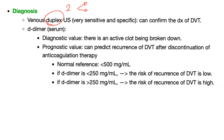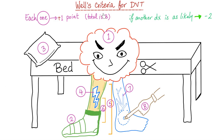Keep in mind that DVT is a common, preventable cause of death in the hospital, so we as doctors need to be vigilant. Other tips and tricks to help diagnose DVT are a group of criteria known as Wells criteria. If you look at the diagram here, you'll discover all of the Wells criteria — but if you don't understand the picture, please watch my previous video on DVT.